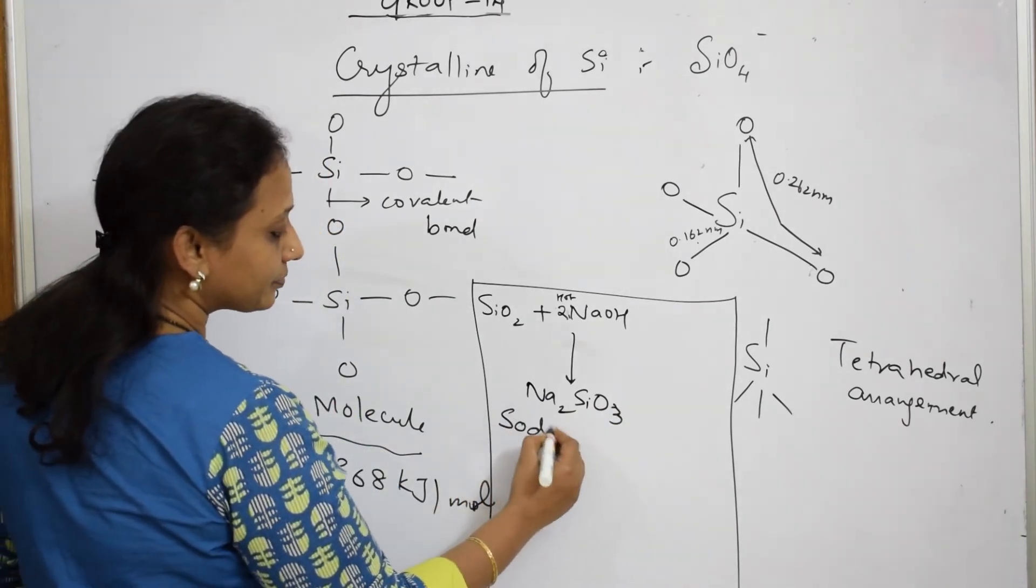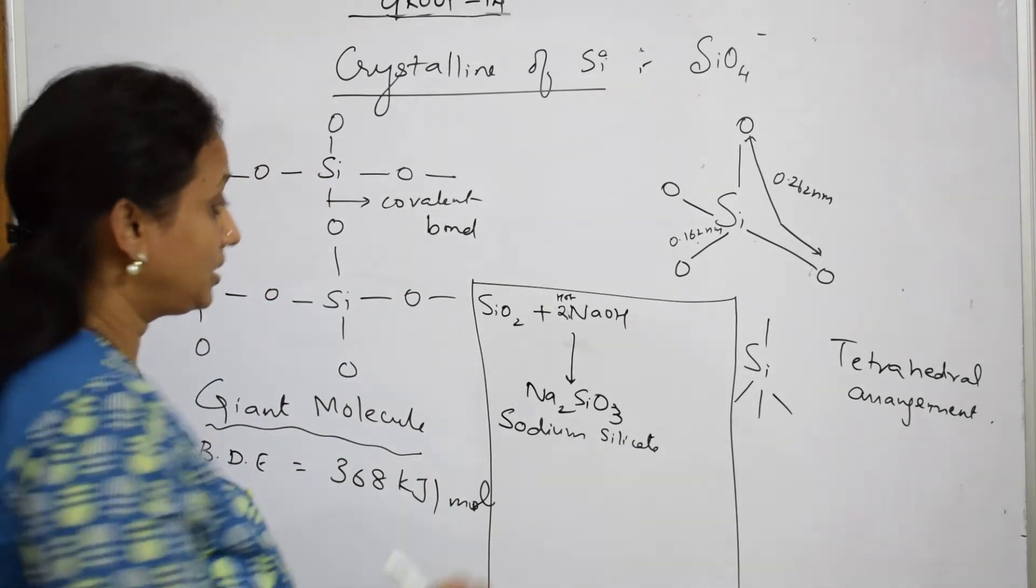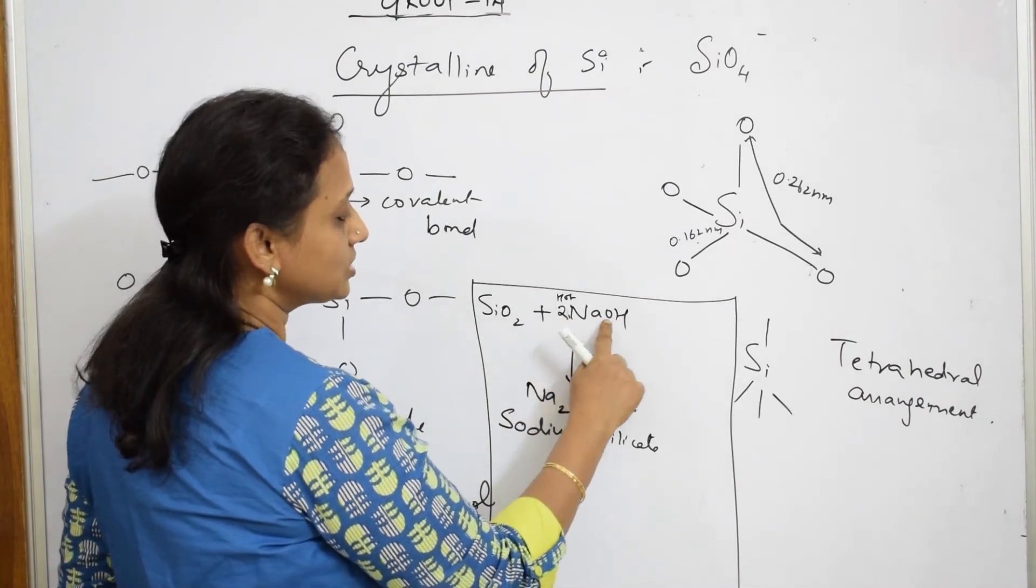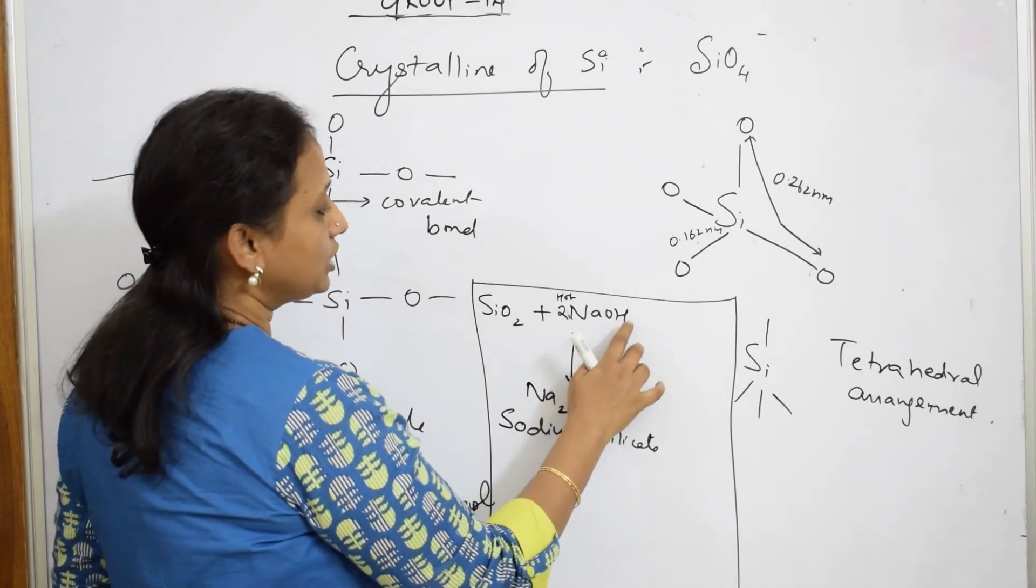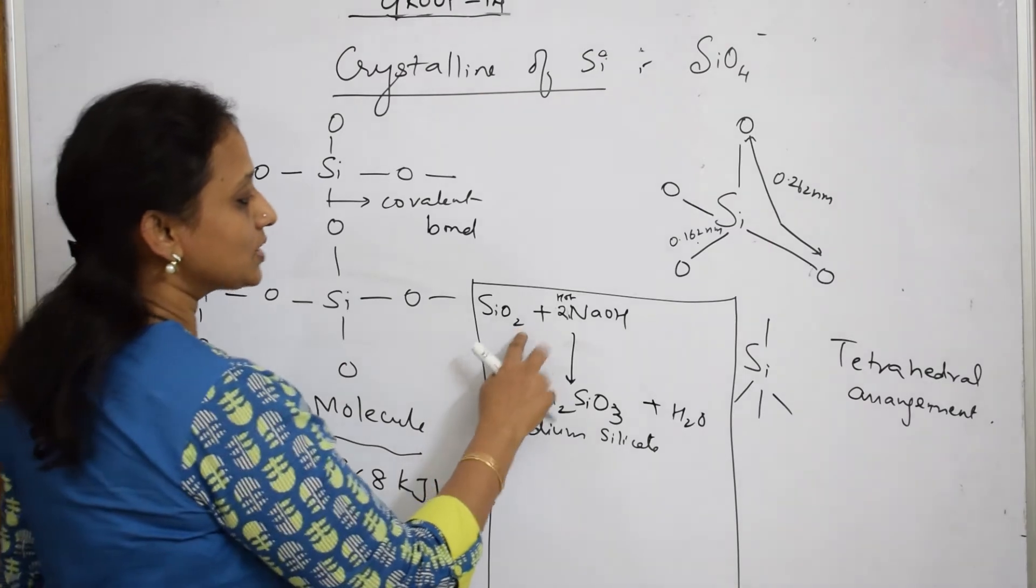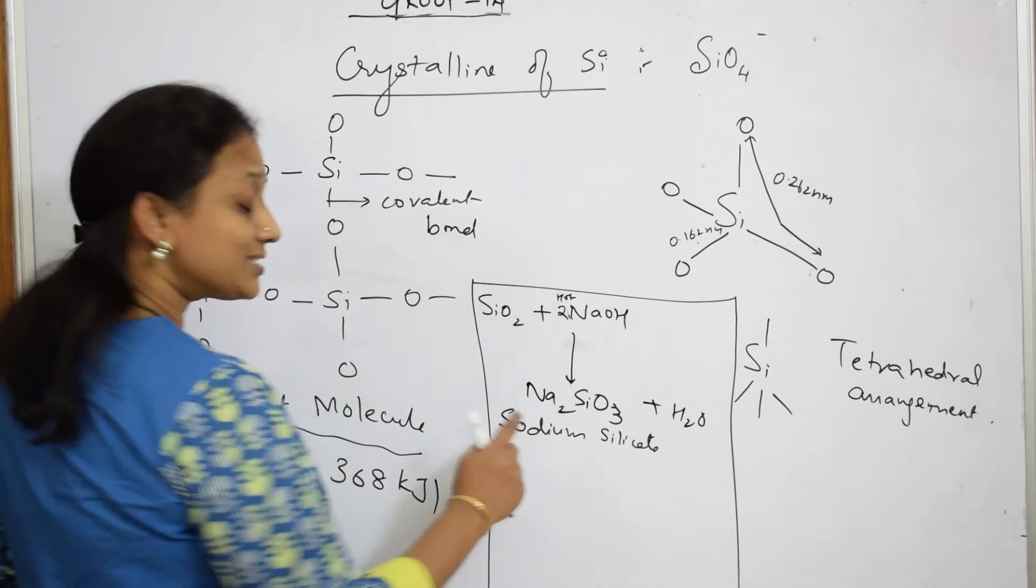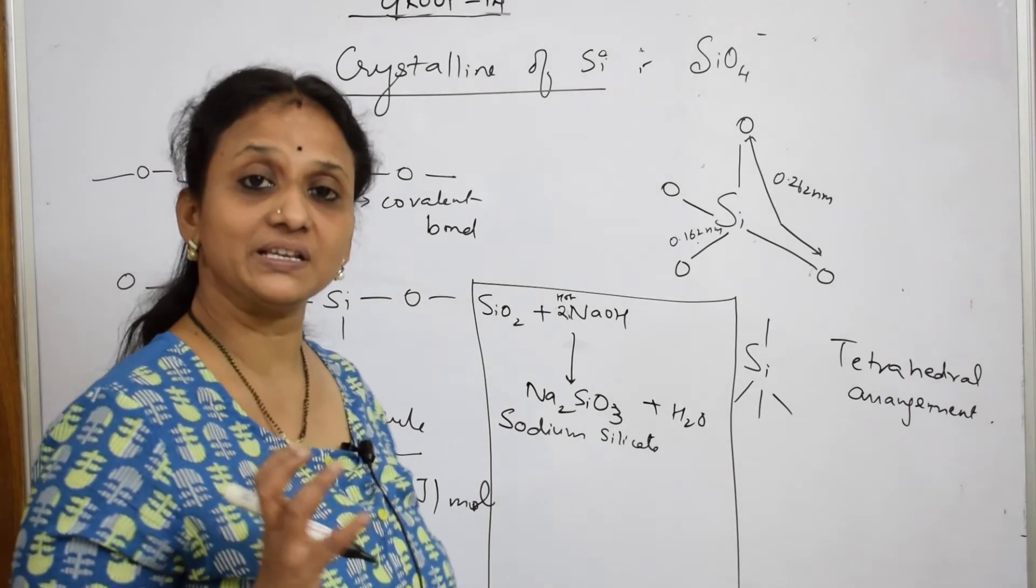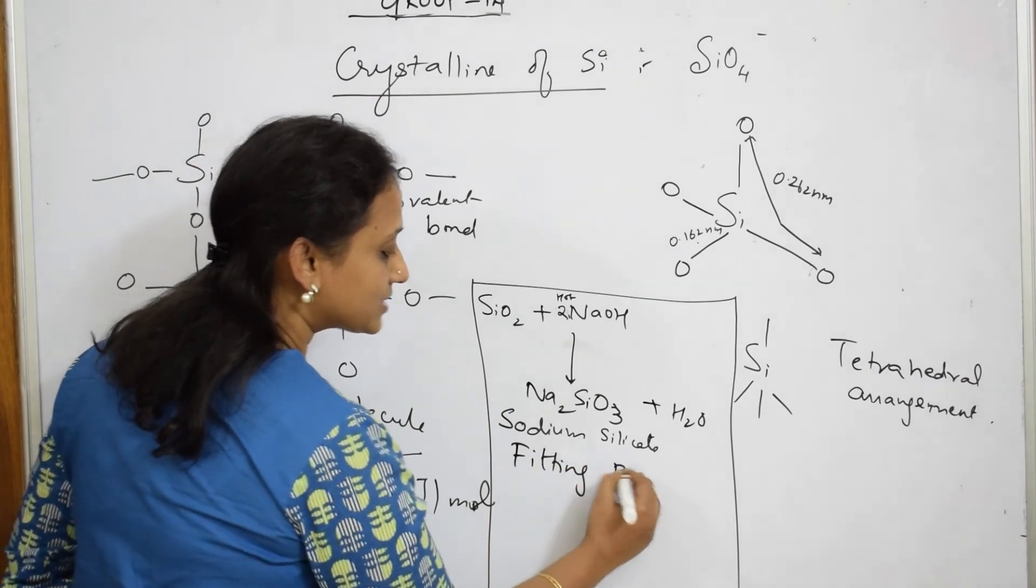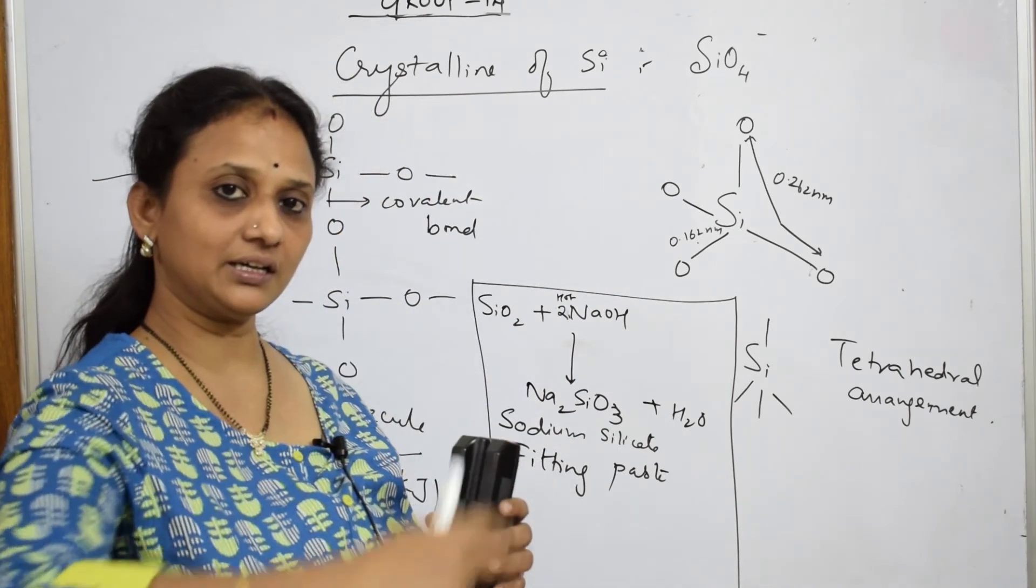What is this compound called? Sodium silicate. This is the name of the compound. And left over, just see, hydrogen and oxygen, 2H2O. Water molecule forms H2O. How? 2 plus 2 is 4, from that 3 have already gone, 1 oxygen has come out with this. Now this sodium silicate is called fitting paste. This is used as fitting paste.